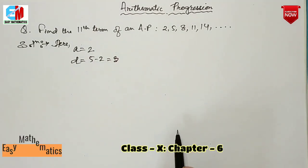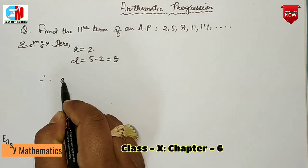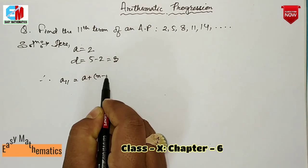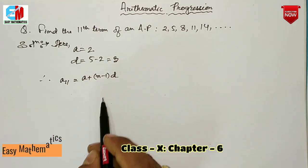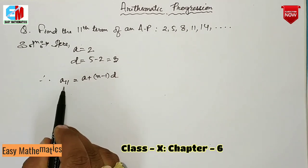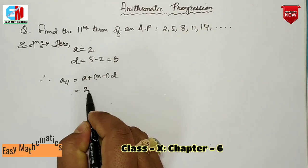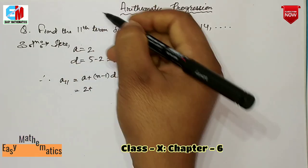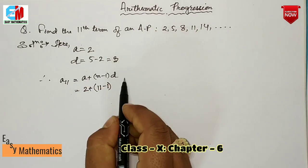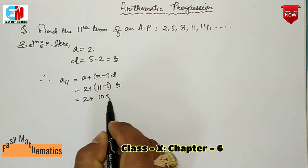Now we write it out: An equals a plus n minus 1 times d. With a equals 2 and n equals 11 and d equals 3, we calculate: 2 plus 11 minus 1 times 3, which is 2 plus 10 into 3.